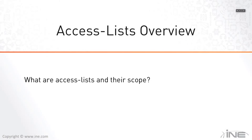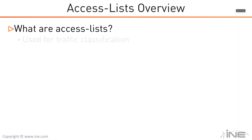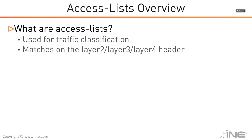Next we're going to speak about access lists, just an introduction — an access overview. We're going to see what the access list types are, their scopes, and why they exist. Access lists are primarily used for traffic classification, and based on the access list type or version, they can match or classify traffic based on either the Layer 2, Layer 3, or Layer 4 header, or a combination of those headers.